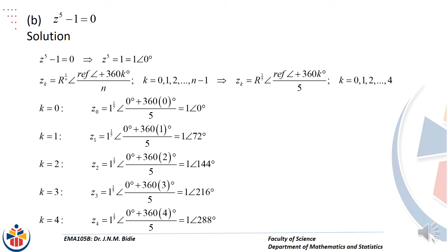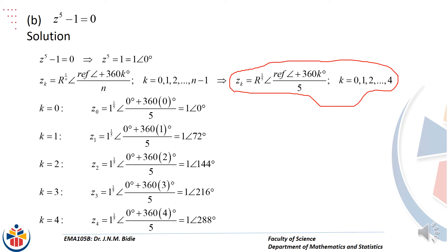Let's go to part b. We've got z to the power 5 minus 1 equal to 0, so z to the power 5 equals 1. Remember that 1 is on the positive real axis: the value for y is 0 and x is 1, so we have 1 cis 0 degrees, meaning our reference angle is 0. We write the formula with n equal to 5, so k starts from 0 to 4, giving us 5 roots.